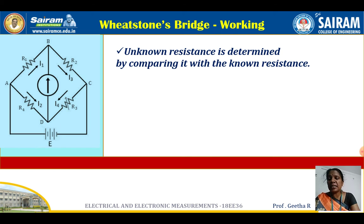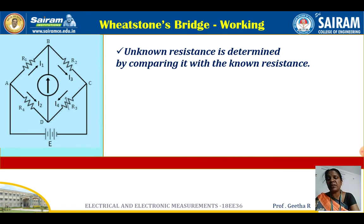The unknown resistor R4 is determined by comparing it with the known resistances R1 and R2. R3 is a variable resistance whose value can be adjusted. By adjusting R3, the unknown resistance R4 can be calculated by comparing it with the known resistances.